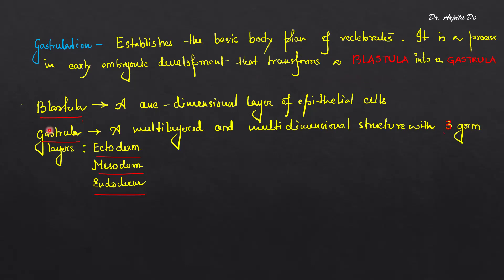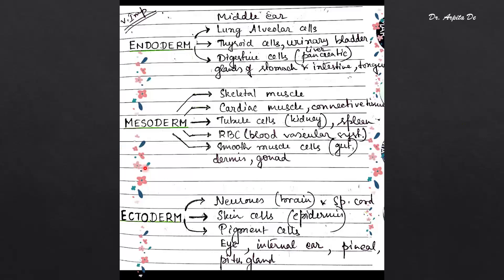What is blastula? Blastula is a one-dimensional layer of epithelial cells, whereas gastrula is a multi-layered and multi-dimensional structure with three germ layers, namely ectoderm, mesoderm, and endoderm. Here I have mentioned the different organs and from where do they originate.